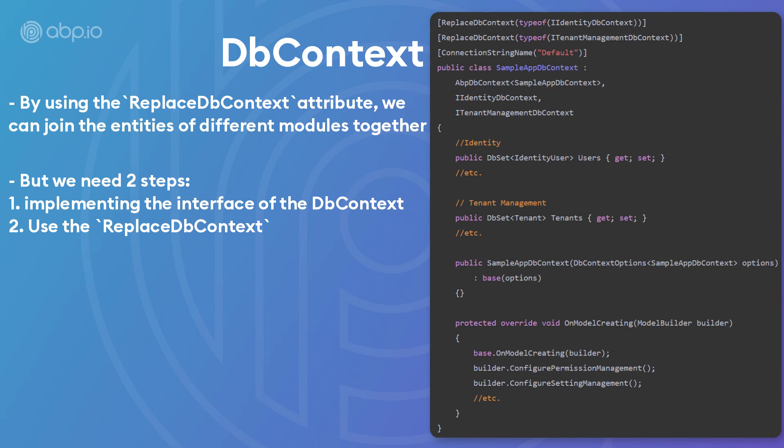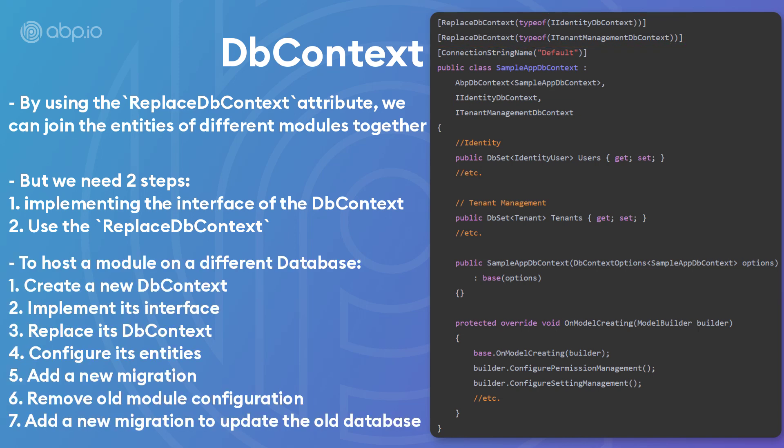We first need to implement the DbContext interfaces of these modules; otherwise, we won't be able to join them. If we wanted to query an existing module and combine it with our own entities, we'll need to implement the interface and replace the DbContext as well. And if we wanted to host a module in a different database, we're going to need to create a new DbContext for it, implement its interface, replace its DbContext, configure the entities, add a new migration, remove the old module configuration, and add a new migration to update the old one.